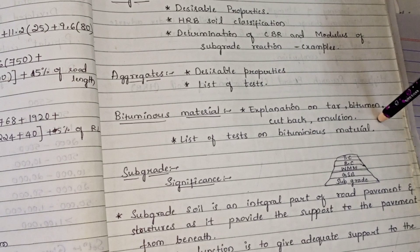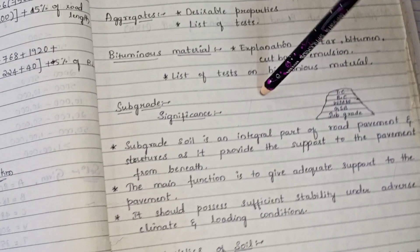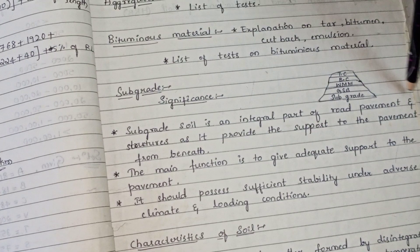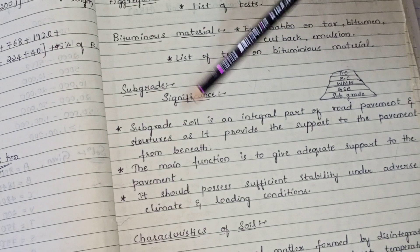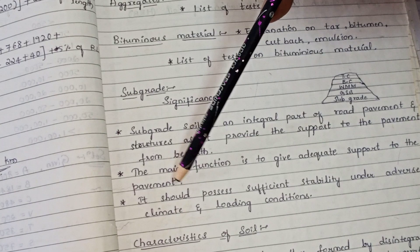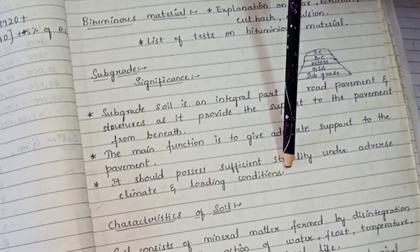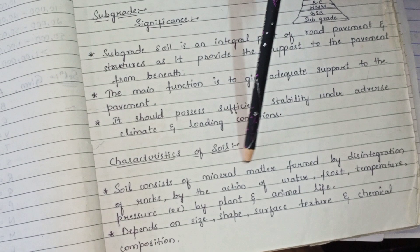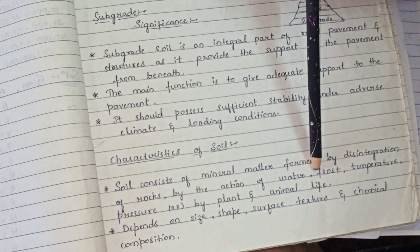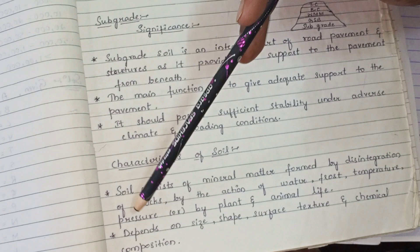Now we will go to subgrade soil. Significance of subgrade soil: subgrade soil is an integral part of road pavement structure as it provides support to the pavement from beneath. The main function is to give adequate support to the pavement. It should possess sufficient stability under adverse climate and loading conditions. Soil consists of mineral matter formed by disintegration of rocks by the action of water, frost, temperature, pressure, or by plants or animal life.